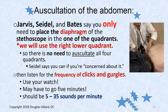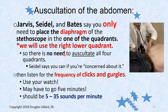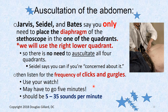To auscultate the abdomen: use the diaphragm in one quadrant — we'll go with the right lower quadrant like Bates does. There's no need to auscultate all four quadrants; it's unnecessary according to the board book. Then listen for the frequency of clicks and gurgles. Count how many there are within a minute — there should be between 5 and 35.